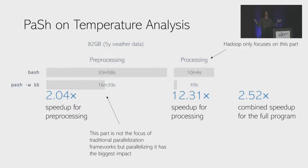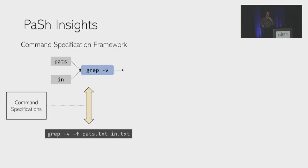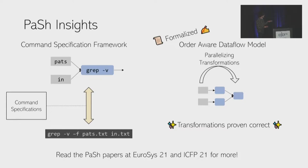How does PaSh achieve these things? First, commands are black boxes — we cannot run analysis on arbitrary binaries. So PaSh introduces a command specification framework that relates command invocations to a clean data flow node abstraction that we can manipulate and parallelize, and also turn back to command invocations. We also introduce an order-aware data flow model with proven-correct parallelizing transformations. You can read more about this in our papers at EuroSys and ICFP.